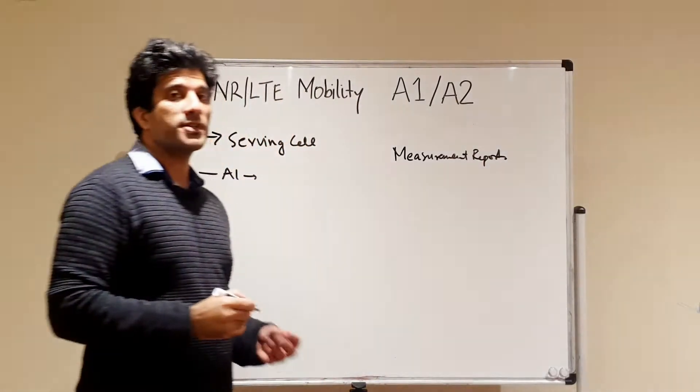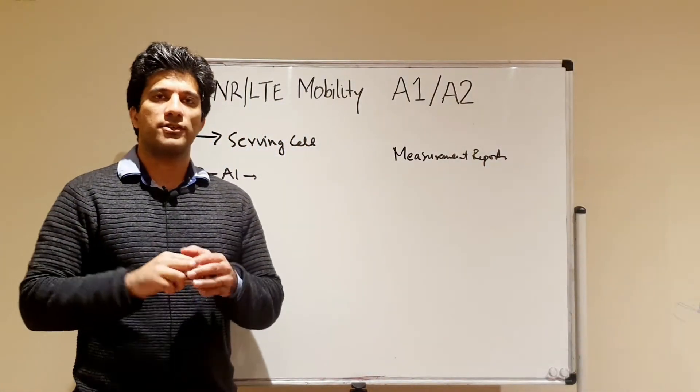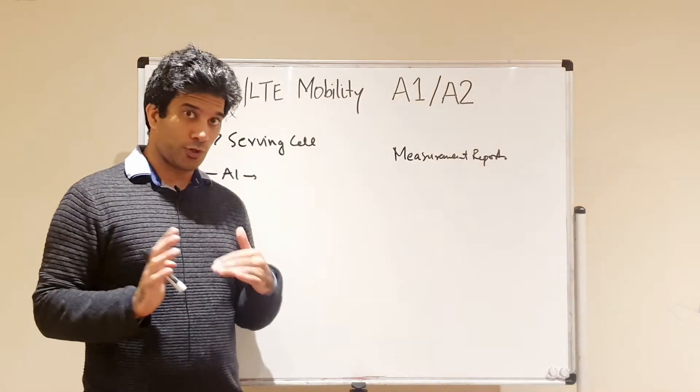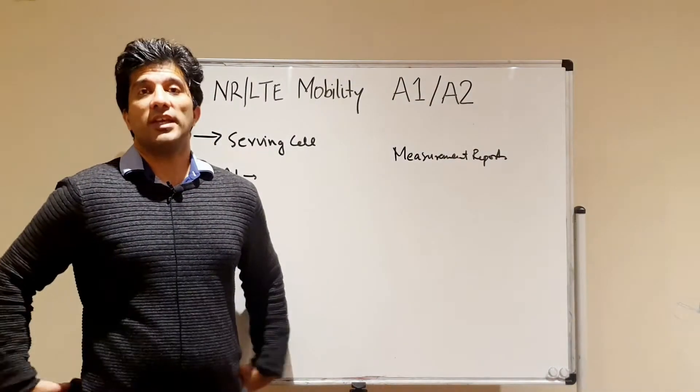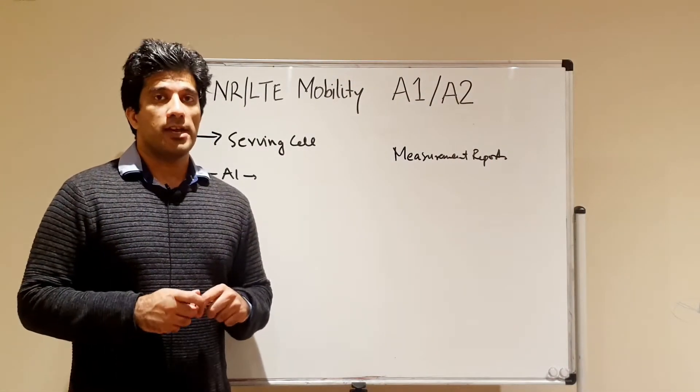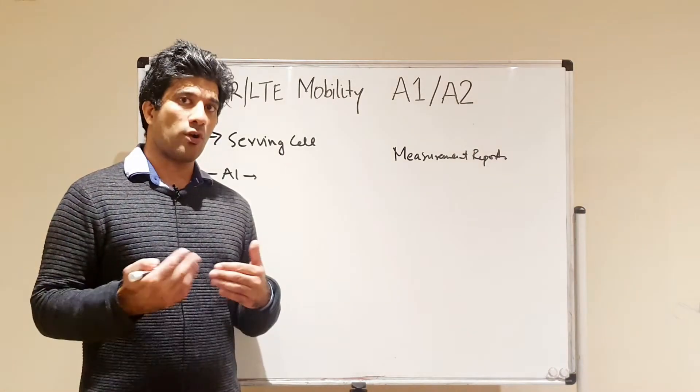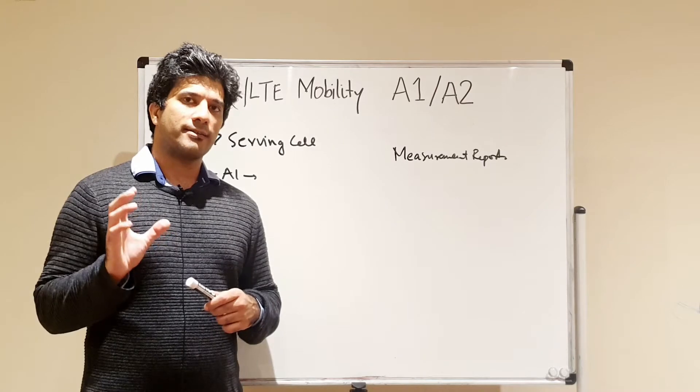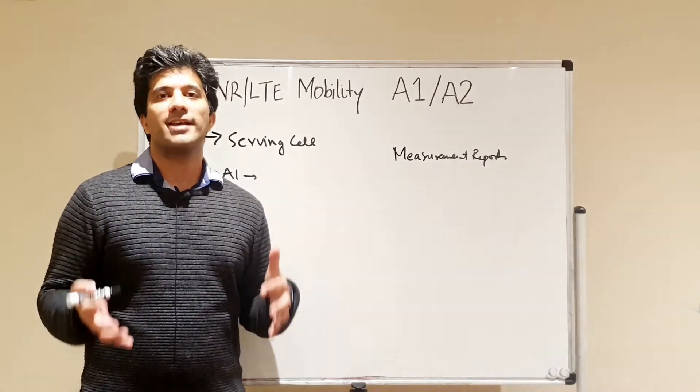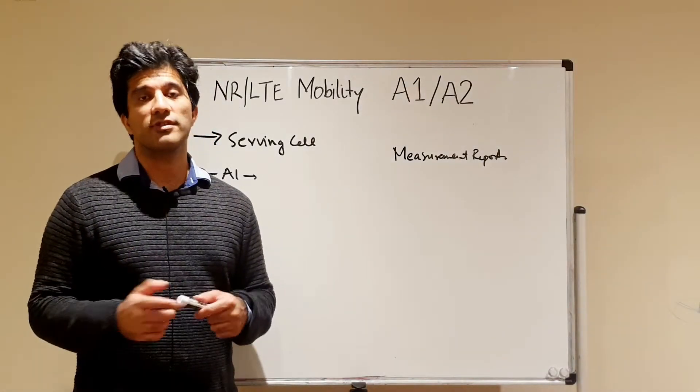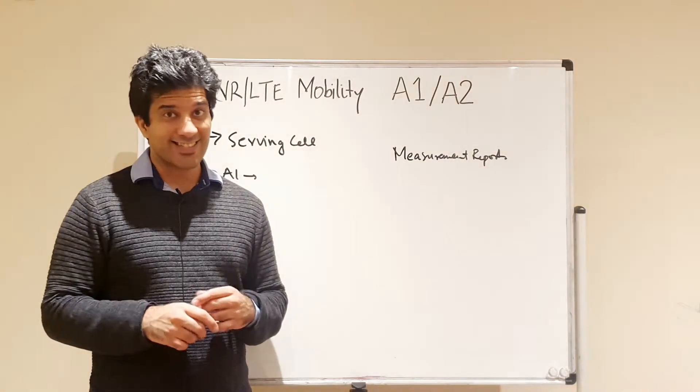So the measurement reports are basically channel reports that your UE sends to the eNodeB describing the channel quality. Now of course, these measurement reports take resources and time on the uplink, so the eNodeB or the scheduler has to decide when to use these resources and when it is necessary to use those resources.